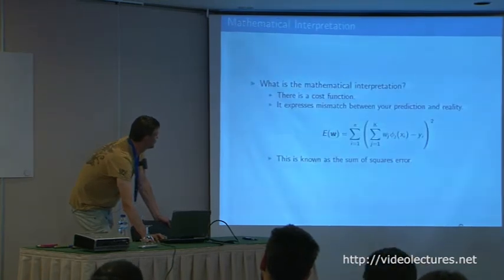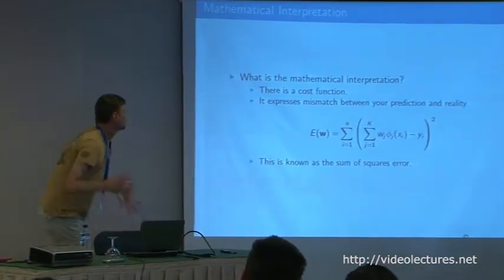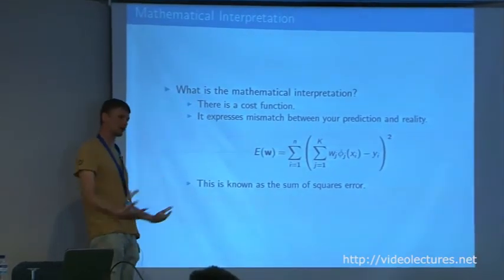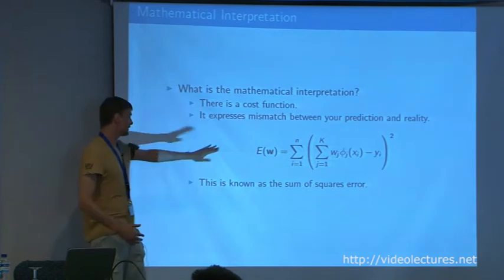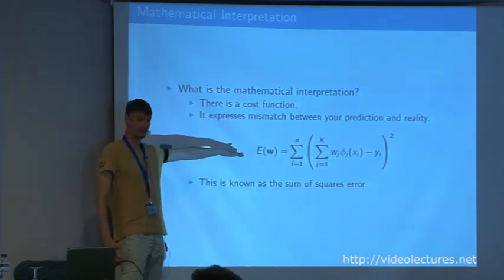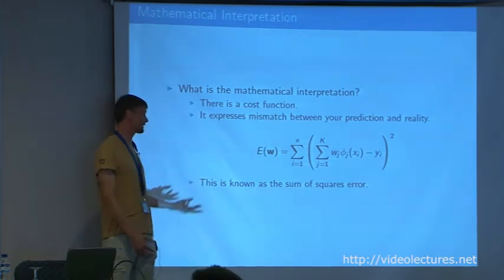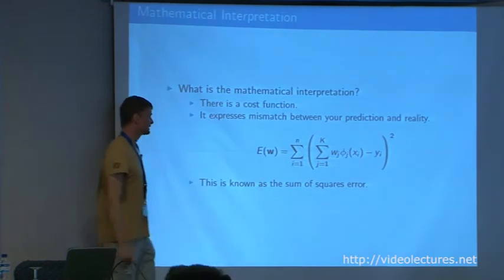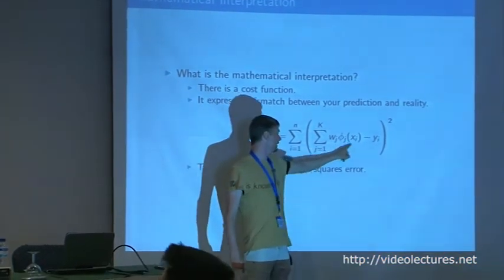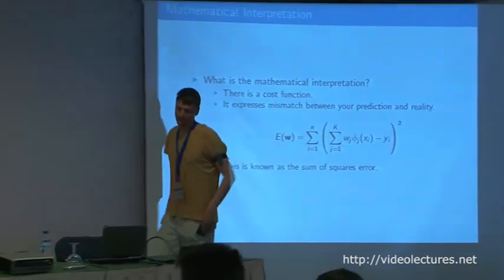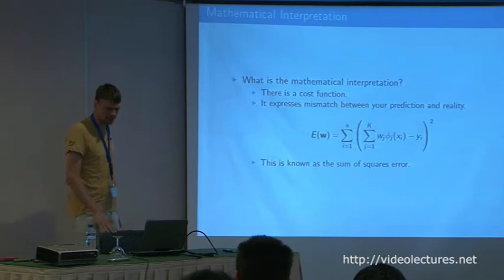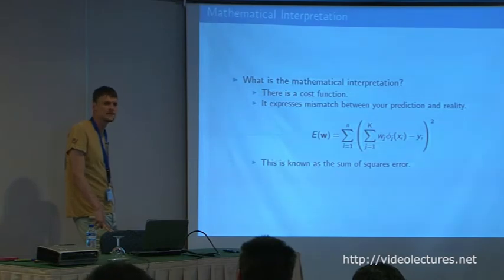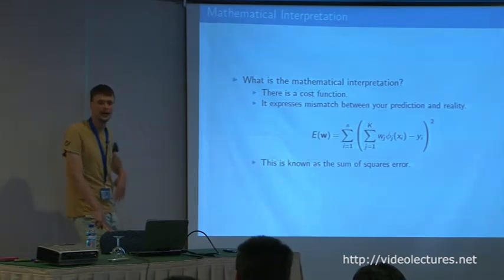What is the mathematical interpretation of these systems? We look at learning rules that minimize this error function — the classic sum of squares that Robert talked about. Who invented the sum of squares error? I always forget — there are too many Frenchmen starting with 'le' and 'la'. I think it was Legendre, but it might have been Lagrange.